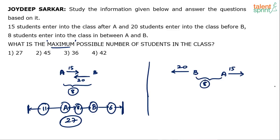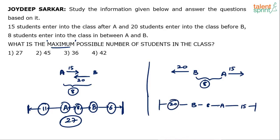Plotting this: B is first, then 8 people between B and A, then A, then 15 people to the end of the class, with 20 people before B at the other end. So 20 plus 8 equals 28, plus 15 equals 43, plus B equals 44, plus A equals 45. The total strength is 45.